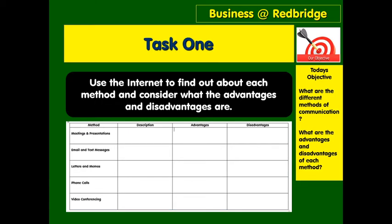The first task is to use the internet, speak to someone at home, or use your memory to fill out a table. If you don't have a printer, that's no problem — you can take each method, describe it, and bullet point some advantages and disadvantages. For example, meetings and presentations: explain what a meeting is — something like what happens in a staff room on a Monday morning where everyone gets together to discuss things. What happens if an important member of staff is stuck in traffic?